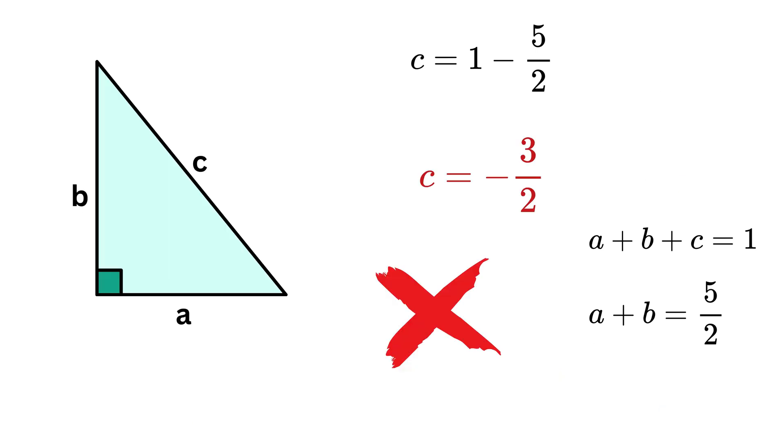But this is not possible because a side of a triangle cannot be negative. Which means that there is no right-angled triangle that can have both its perimeter and its area equal to 1.